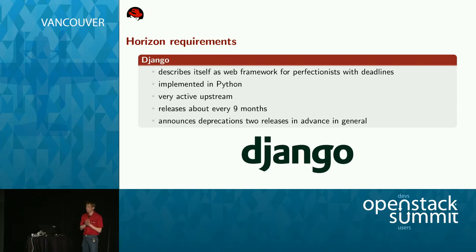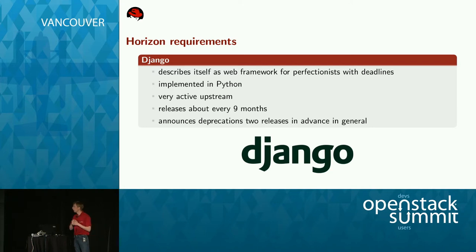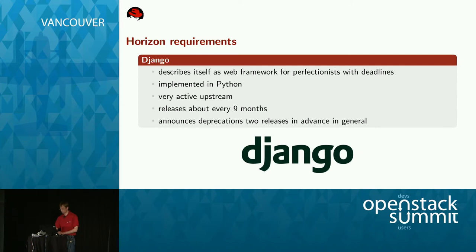Django has a more frequent release cycle, like every nine months. The stable release was 1.4 until April this year, now it's 1.8. We as Horizon upstream currently don't support Django 1.8 yet. The previous release of Django is still supported but will go out of support when the next Django release is out. The latest Horizon you can get is still running on Django 1.7, and 1.7 will be deprecated around Christmas this year.